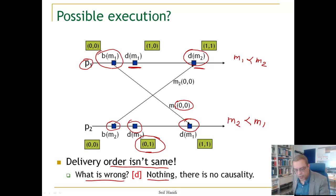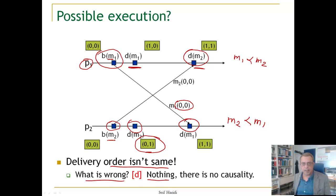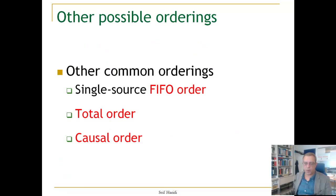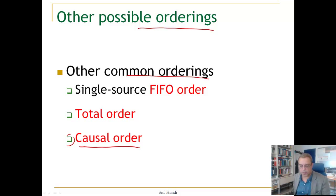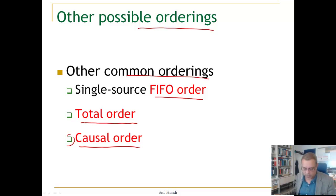In fact, messages M1 and M2 are not causally related, and therefore they can be delivered at any node in arbitrary order. So if we look at what are the possible orderings of message delivery in broadcast, there are a number of common orderings. We have seen causal order broadcast. There is also single source FIFO order, and there is total order.